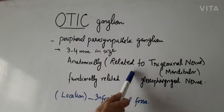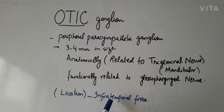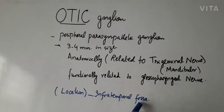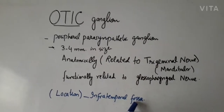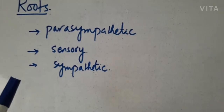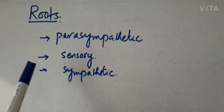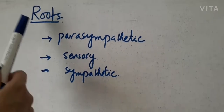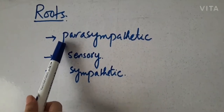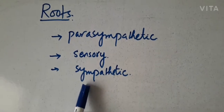Where is the location? It is in the infratemporal fossa, just below the foramen ovale. When you study a parasympathetic ganglion, remember that there are three roots: parasympathetic, sensory, and sympathetic.